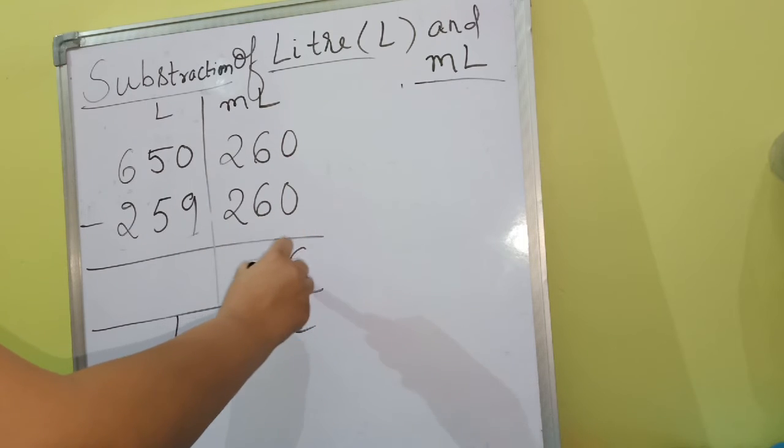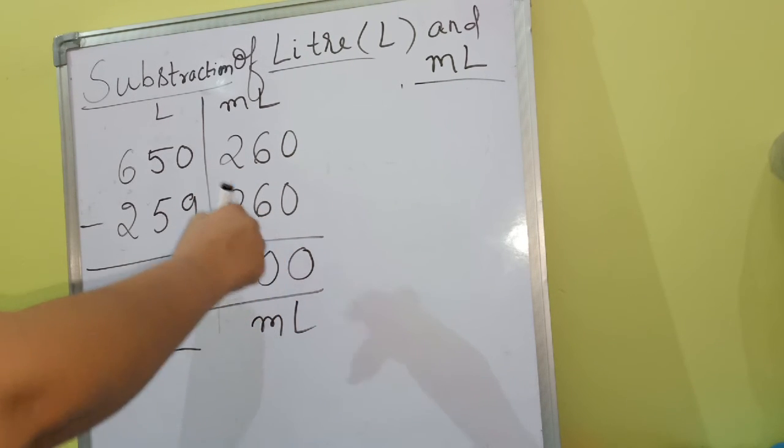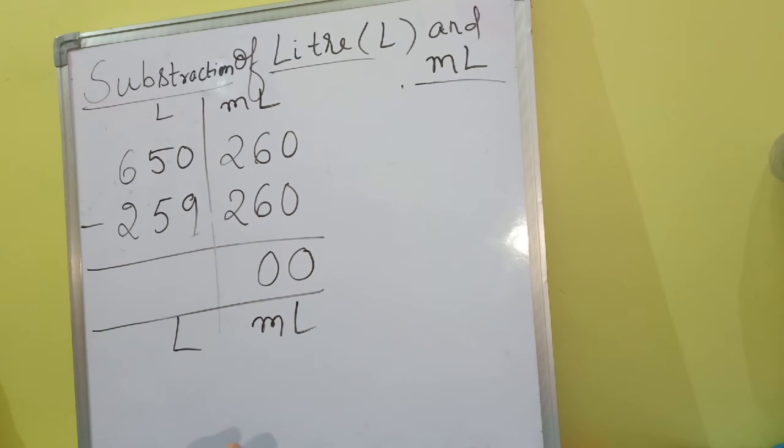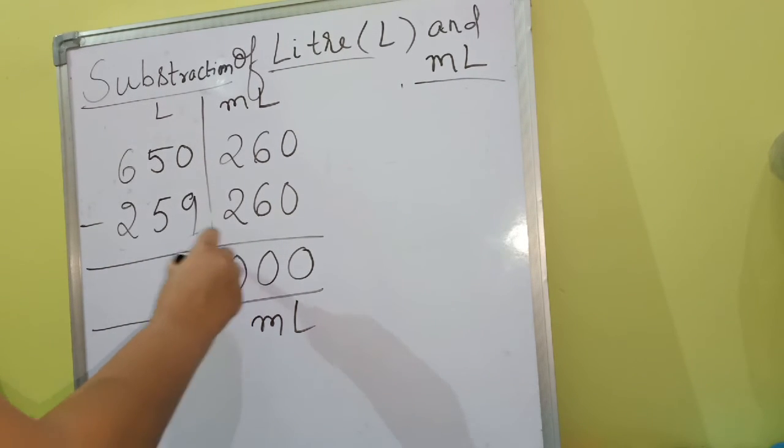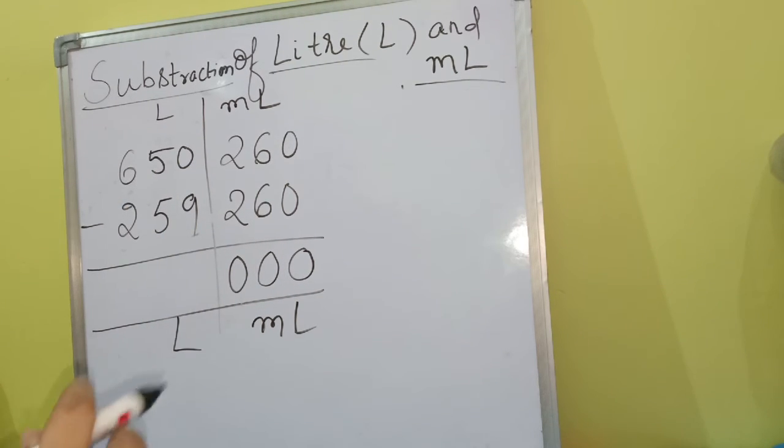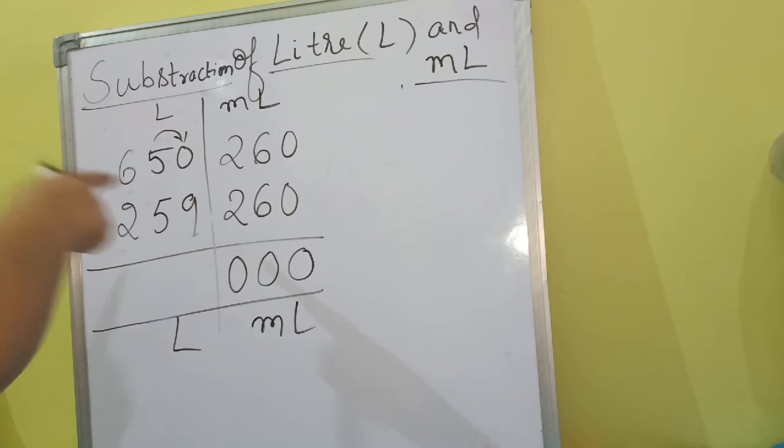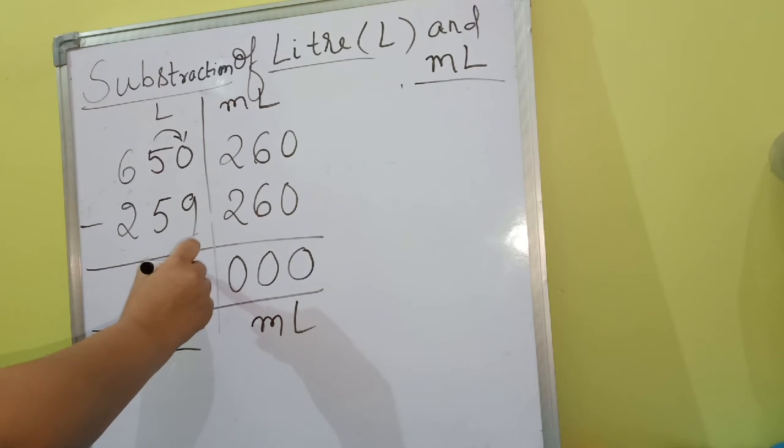0 minus 0 that is 0, 6 minus 6 is 0, 2 minus 2 is 0. 0 minus 9, 0 is smaller than 9, so hume yaha se borrow karenge. To 10 minus 9 is 1.